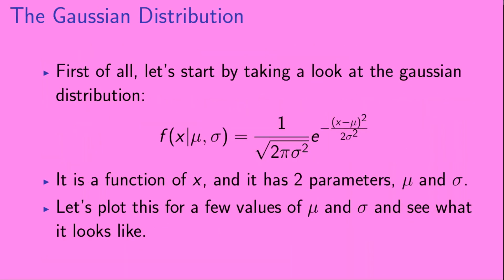Okay, so first of all, let's start by taking a look at the Gaussian distribution. Here, we've written it as f of x given mu and sigma. And so, it's a function of x, but it has two parameters, mu and sigma. So, let's plot this for a few values of mu and sigma and see what it looks like.